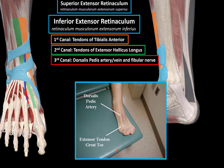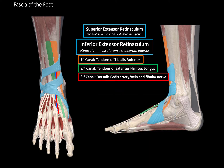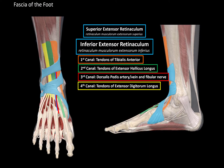One way to find the dorsalis pedis pulse is to extend the toe so that the tendon of the extensor hallucis longus pops up. Then palpate laterally to that tendon and you'll feel the dorsalis pedis artery pulsating. The fourth canal is for the tendons of the extensor digitorum longus.